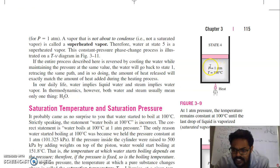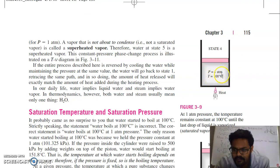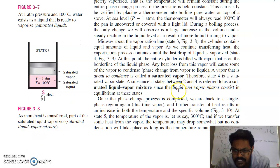We have just reached the position where complete liquid is converted into vapour — this is completely vapour. If there is any heat loss from this vapour, somehow it will condense and convert back into liquid form. Therefore, state 4 is called the saturated vapour state. This is the state where you have complete vapour, and it is called the saturated state. Since the liquid and vapour phases co-exist in equilibrium at these states, it is also called a saturated liquid-vapour mixture.